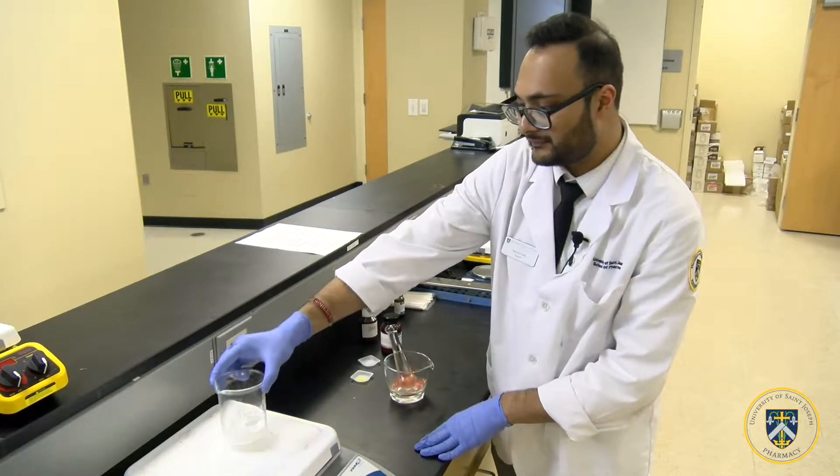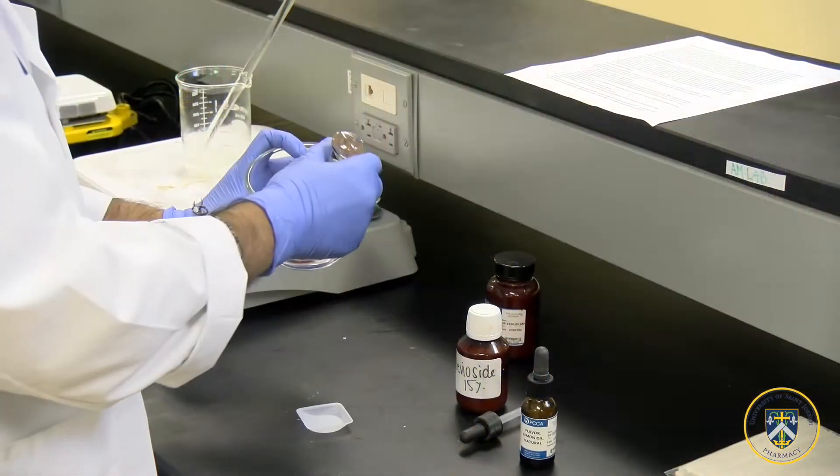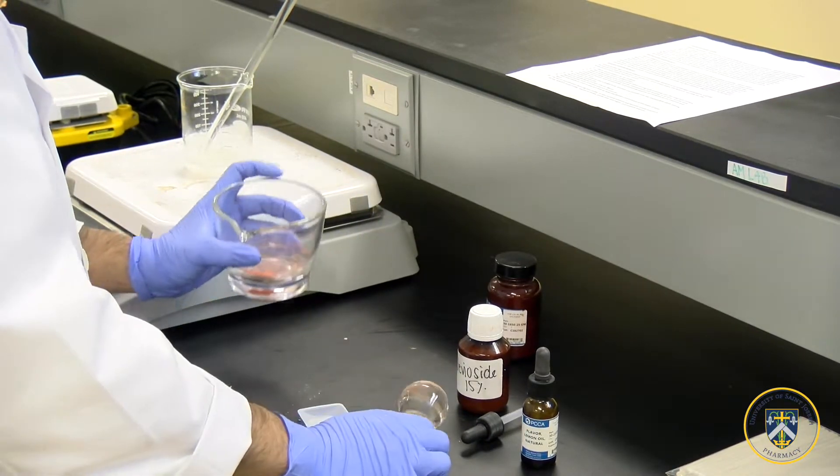Add the sorbitol base in a beaker onto your hot plate to melt it down. After your powder is triturated evenly, add it to a weighing boat.